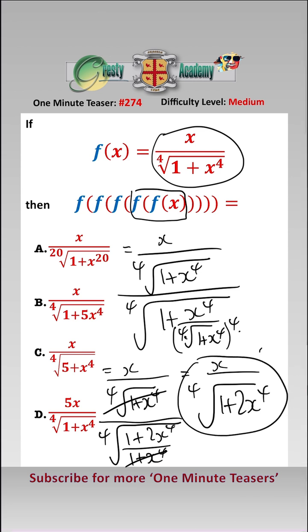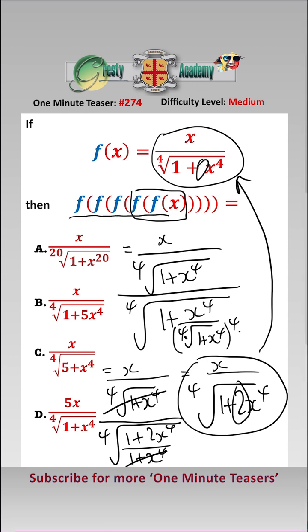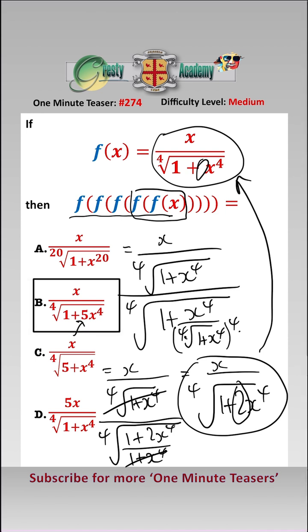Comparing this to our original function, we have a 2 instead of a 1 and everything else is the same. So therefore f of f of f of f of f will be 5 instead of 1, which is answer b.